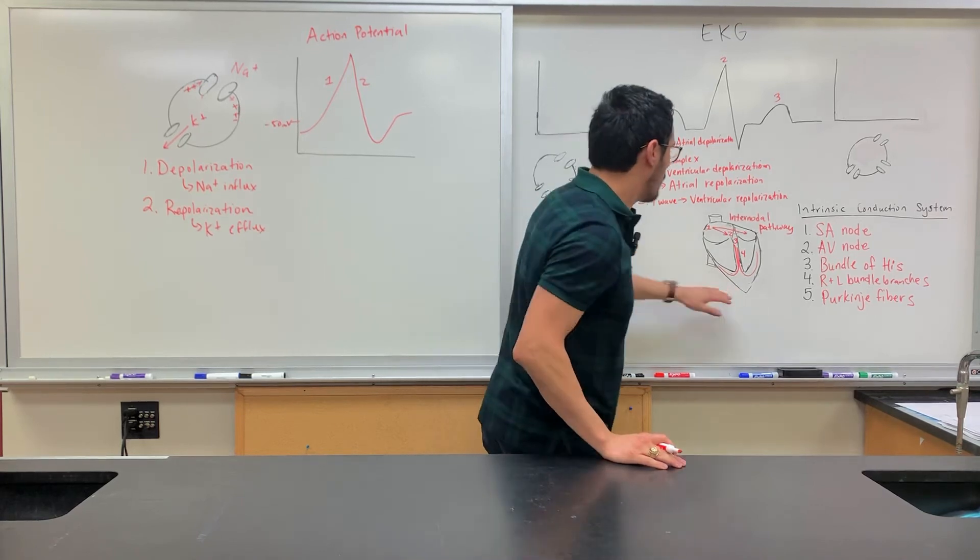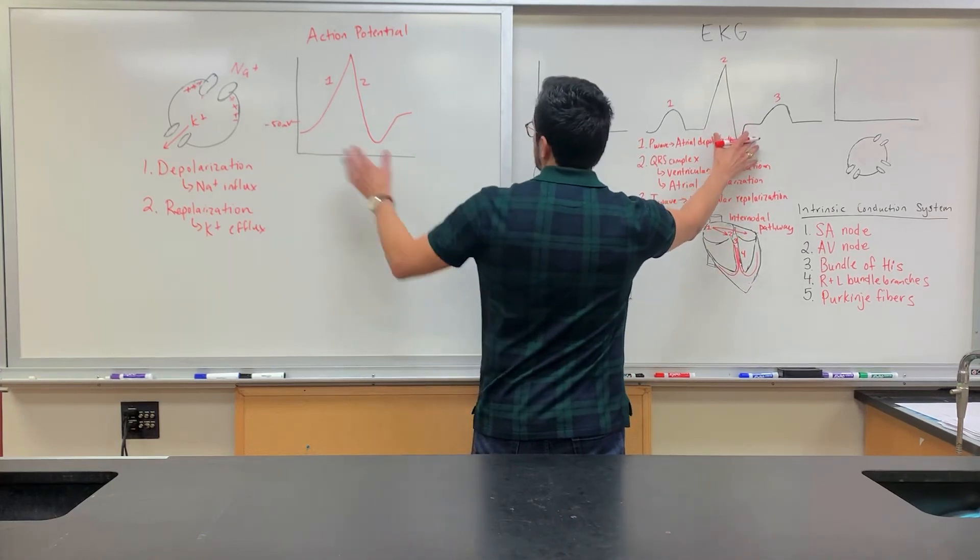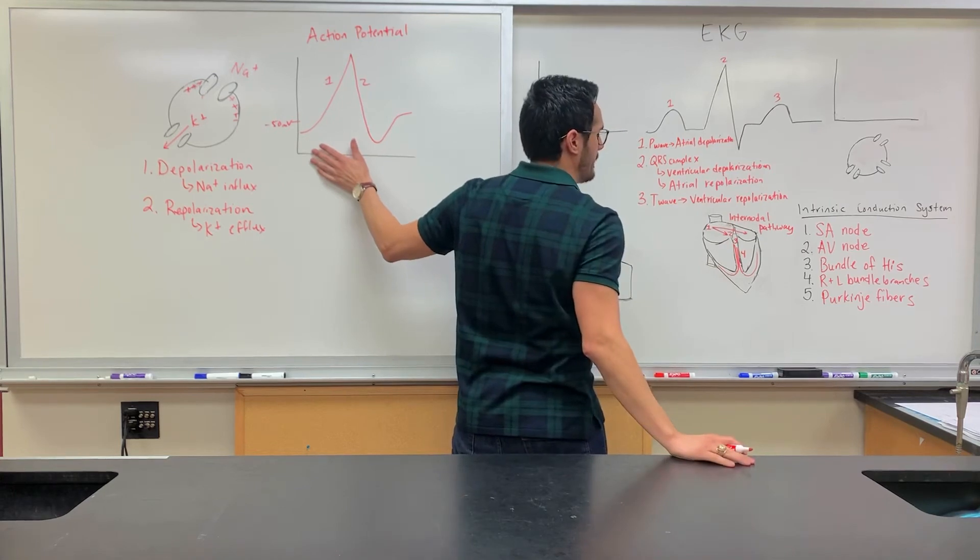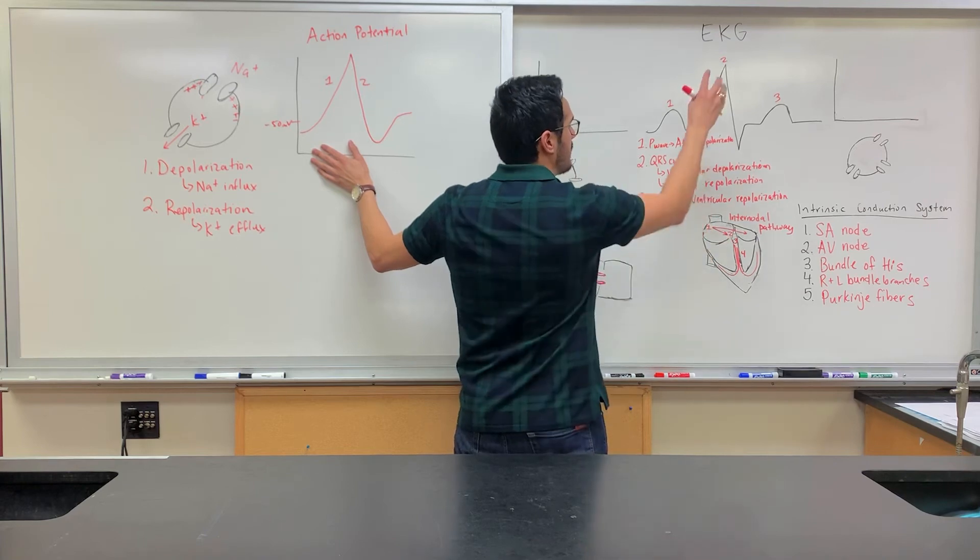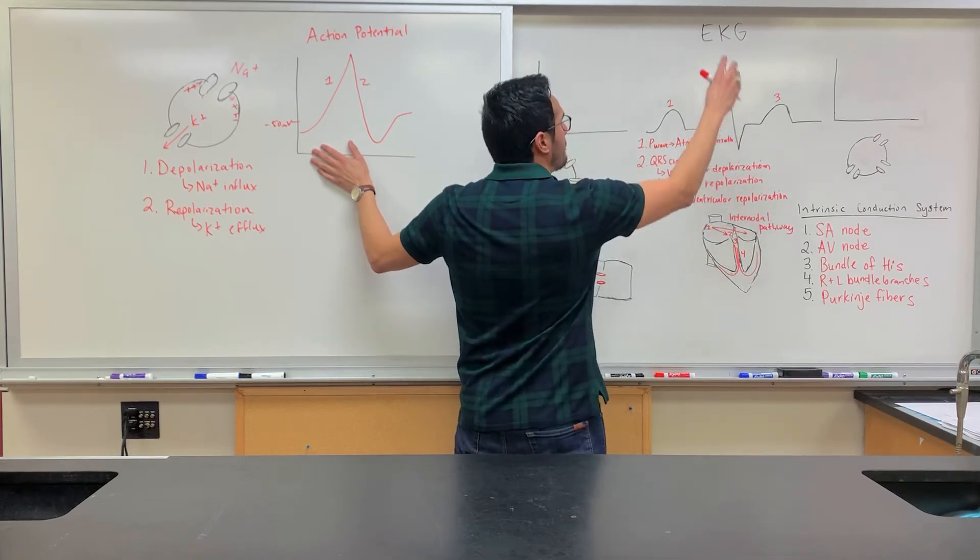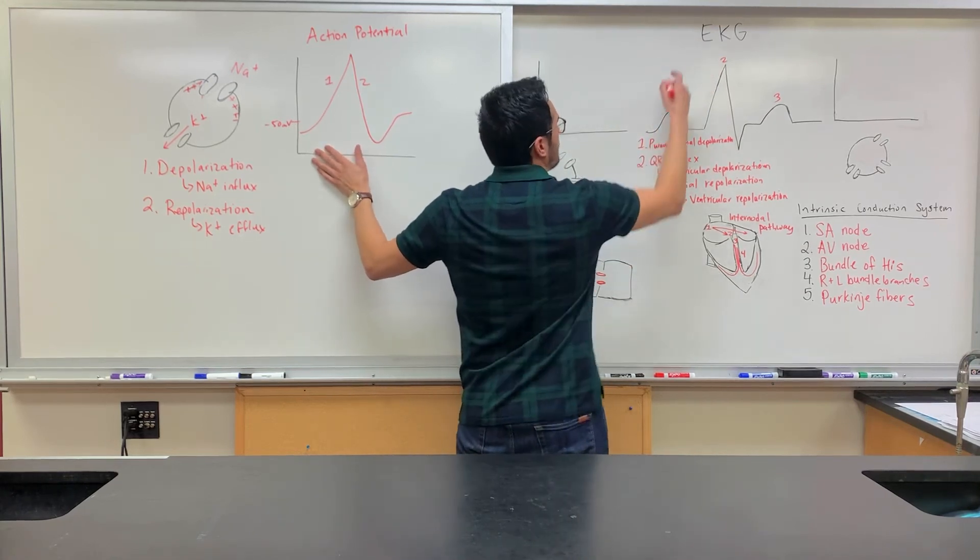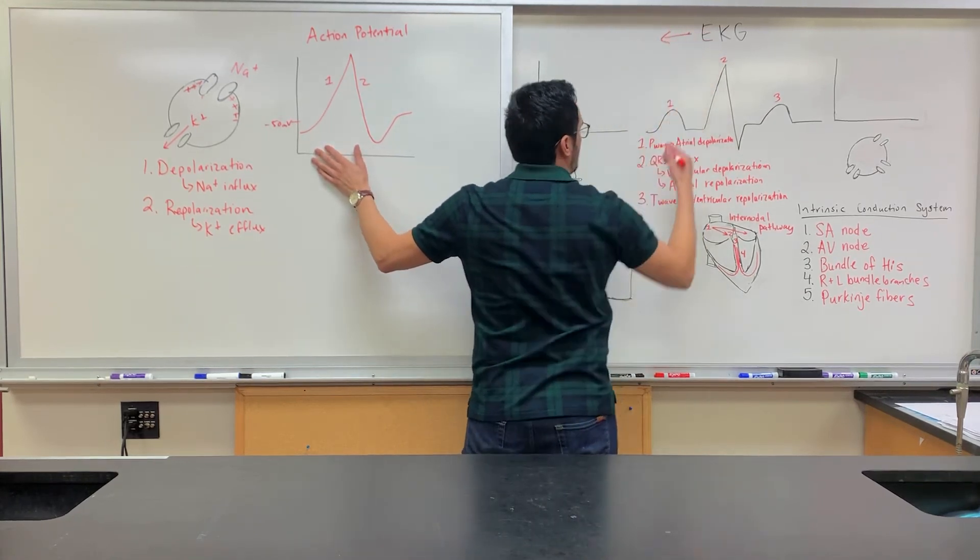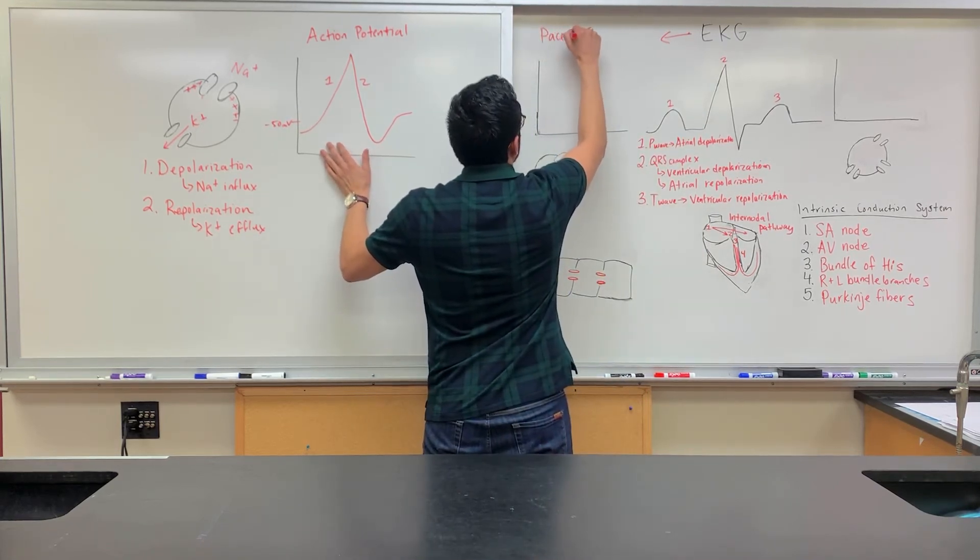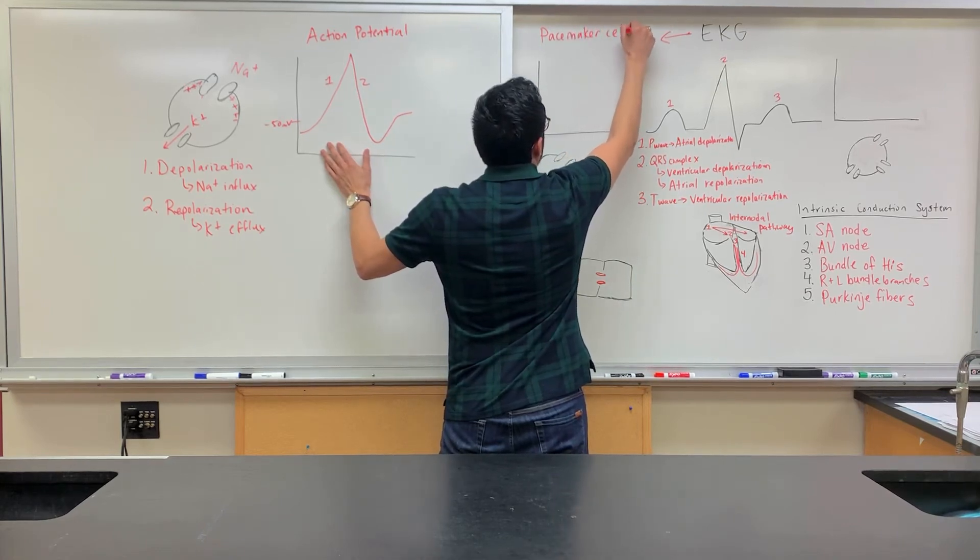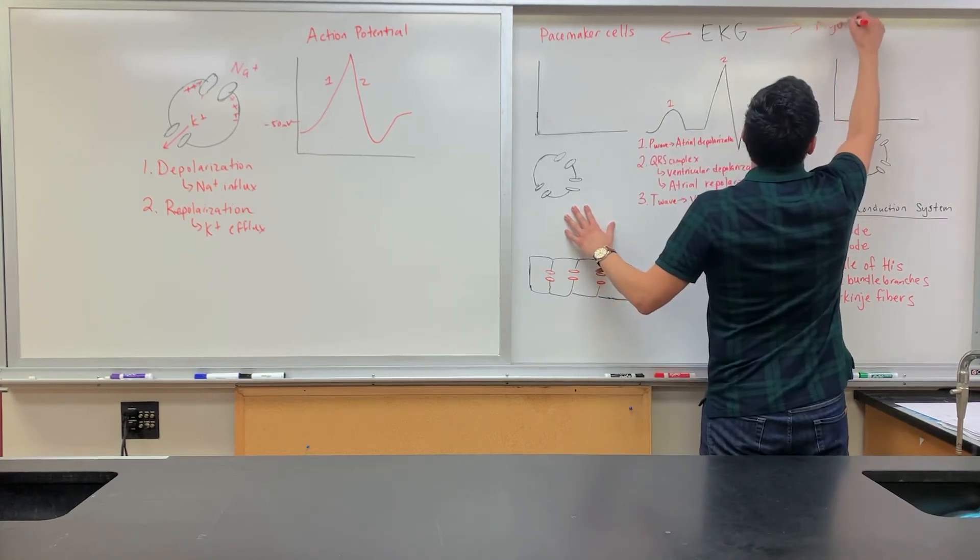I've already introduced that an EKG is not one single action potential. There are two main types of cells that are found within the heart. For the EKG, we are considering the electrical activity of everything. The two main types of cells found within the heart: you have what's known as the pacemaker cells, as well as the large bulk of the heart, which is the myocytes themselves, the muscle cells.